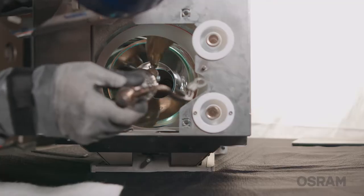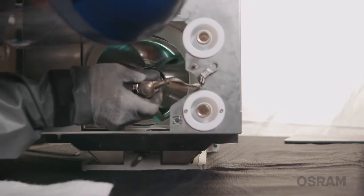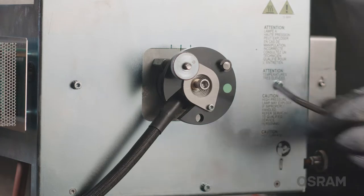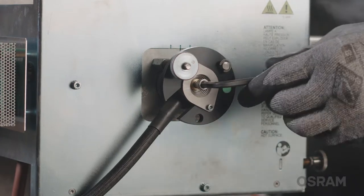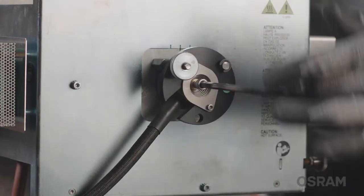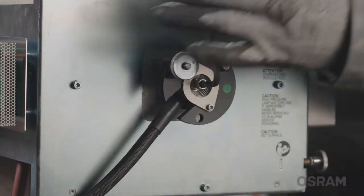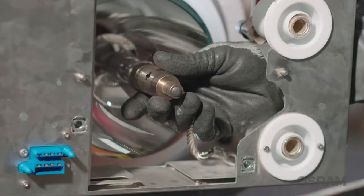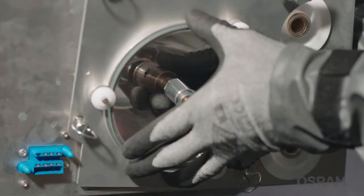For Barco lamp houses, ensure that the cathode adapter sits flush with the lamp's base. Make sure that the 5mm Allen screw connecting the lamp to the lamp house is correctly tightened. Confirm that the anode side of the lamp is safely supported in the lamp house.